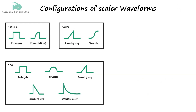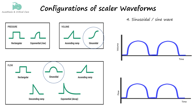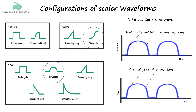The fourth type is the sinusoidal waveform, often referred to as the sine wave. This waveform mimics the shape of a sine wave, creating a smooth, repetitive oscillation. It represents a breath that gradually increases and decreases in a rhythmic pattern, resembling the natural breathing process.